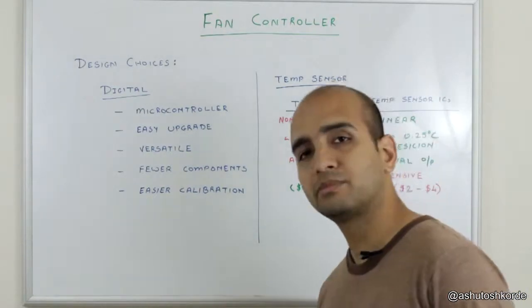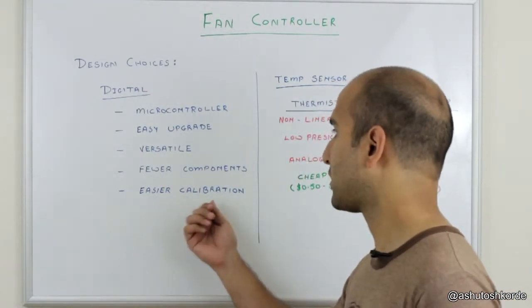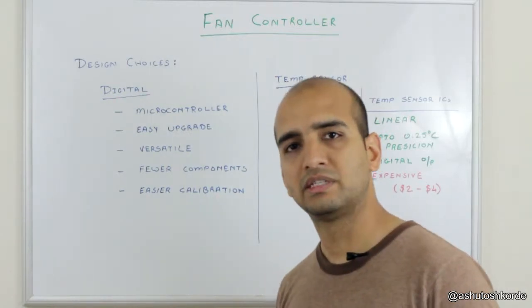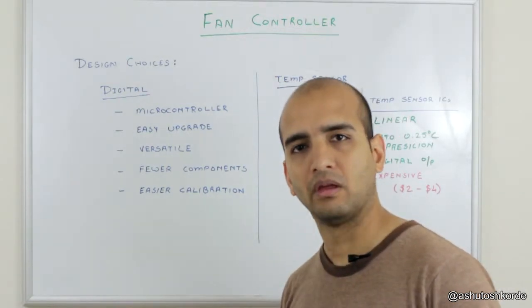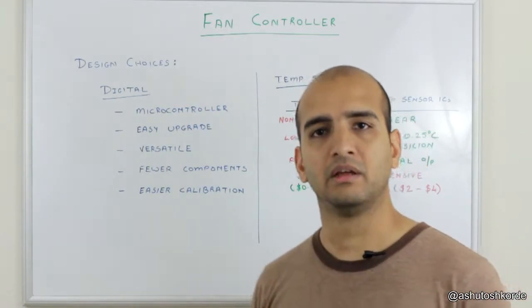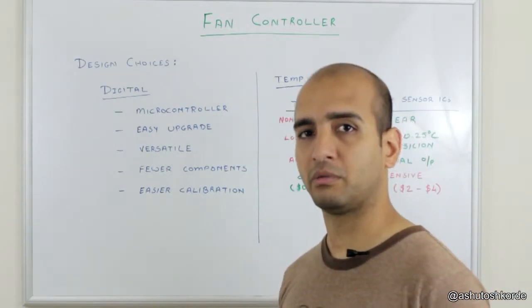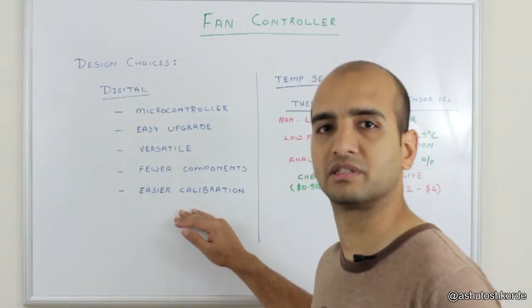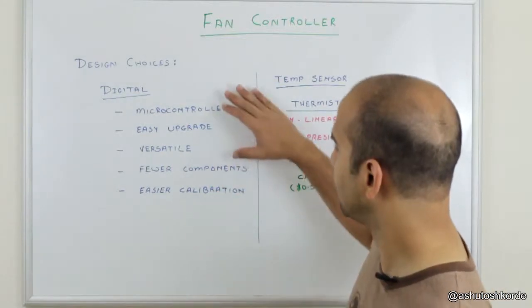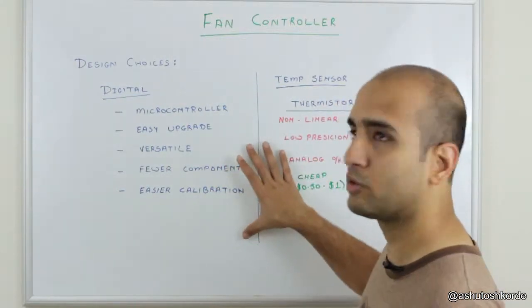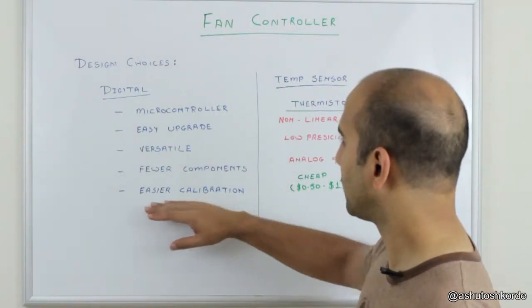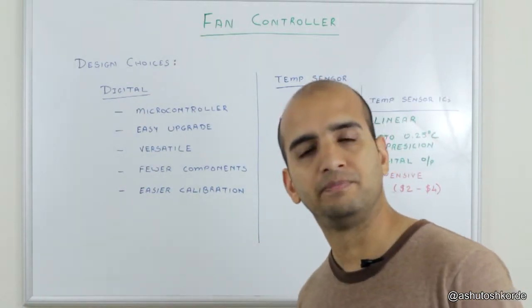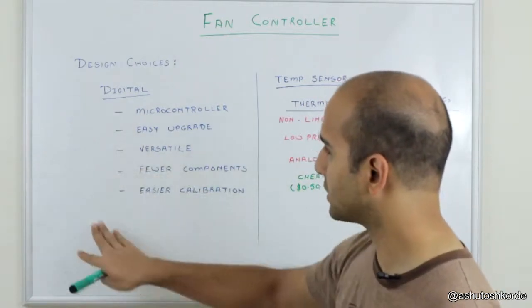The last but not the least point is about calibration. So inherently all of these sensors need some sort of calibration. If this was an analog design we would have had to put in trimmer potentiometers to calibrate our temperature sensors, but now since we are going the digital route, we can trim or calibrate our sensors in software itself. These are the basic benefits of going digital.